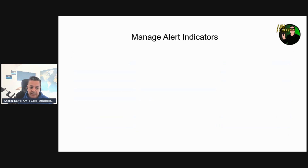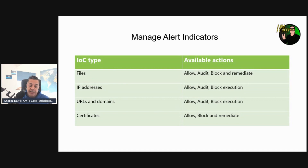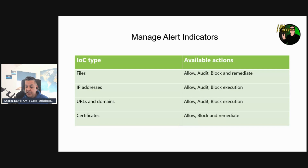Let's talk about managing alert indicators. Indicator of Compromise, or IOC, matching is an essential feature in every endpoint protection solution. This capability gives SecOps the ability to set a list of detection indicators for blocking and prevention response. Looking at IOC types: for files, available actions are allow, audit, block, or remediate. For IP addresses, you can allow, audit, or block execution. URLs and domains also support allow, audit, or block execution. For certificates, you can allow, block, or remediate.